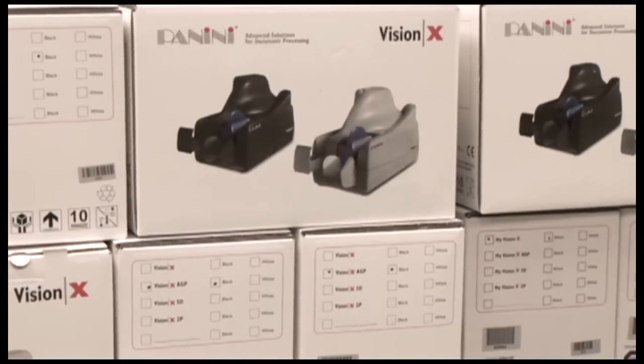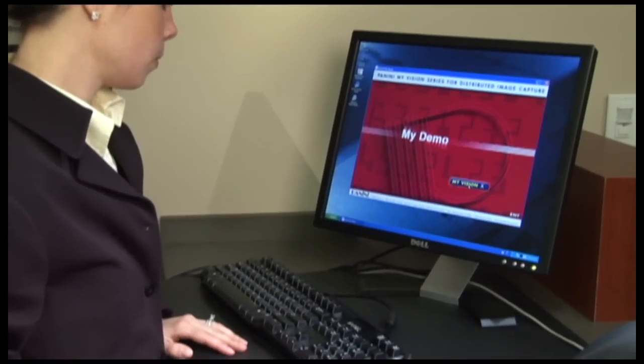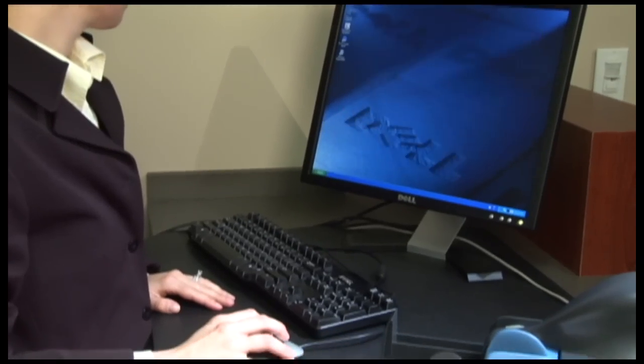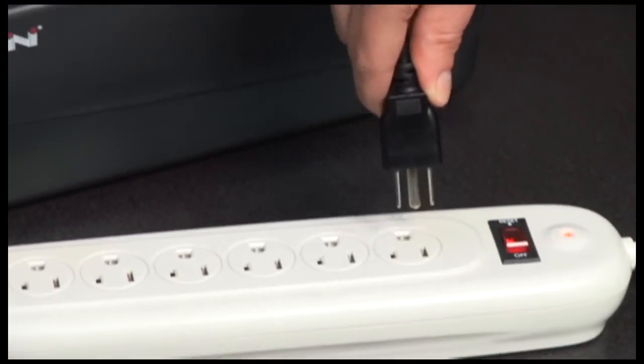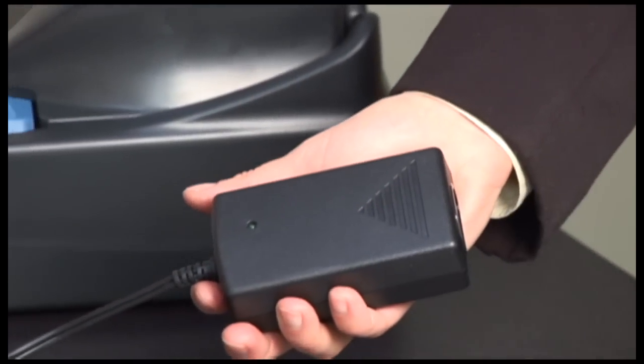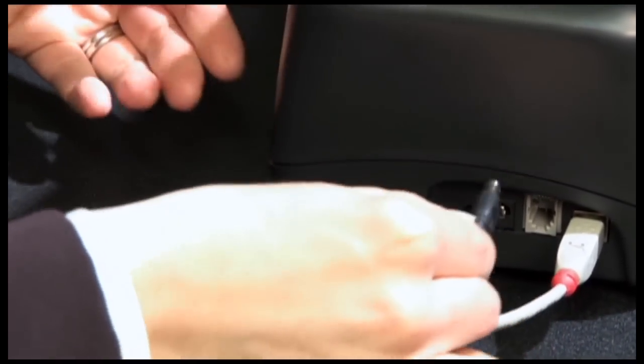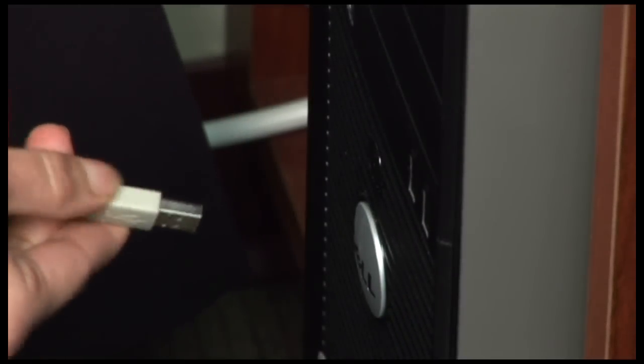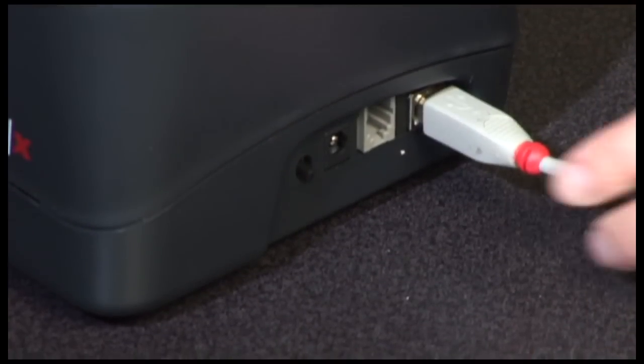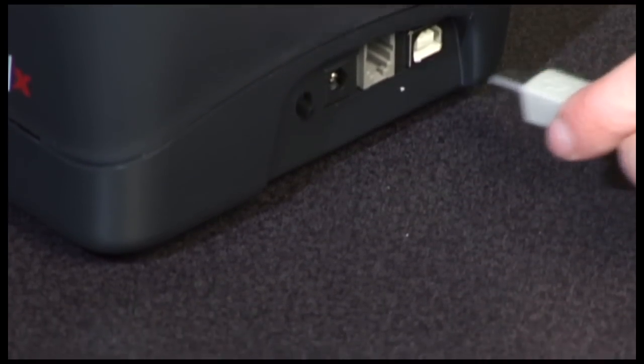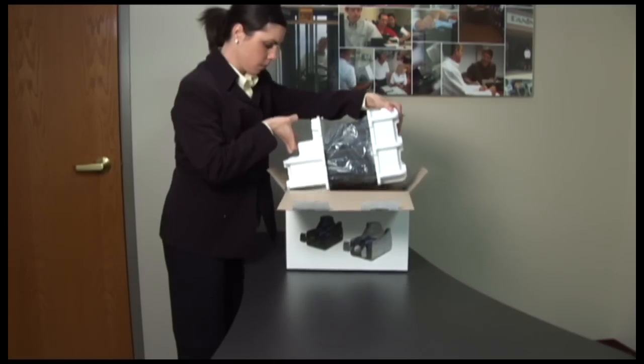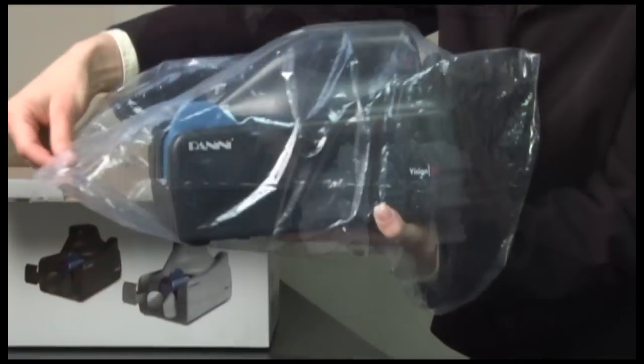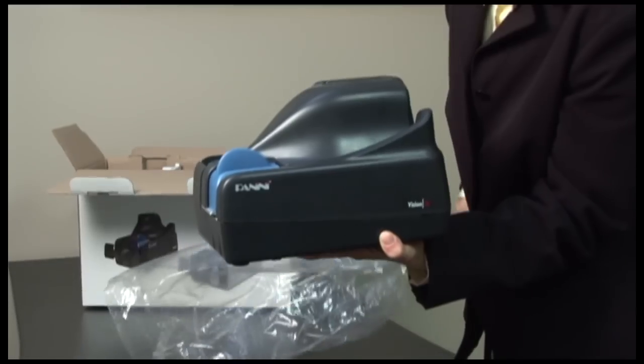If there is a need to replace an existing VisionX scanner for another VisionX, disconnecting the scanner is quite easy. Terminate the VisionX capture application on the PC. Disconnect the VisionX power supply from the wall outlet. Disconnect the VisionX power supply cable from the VisionX. Disconnect the USB cable from the PC. Note which USB port the cable is using. Disconnect the USB cable from the VisionX. You are now ready to connect your replacement VisionX. Please follow the instructions provided in the installation and setup section of this video.